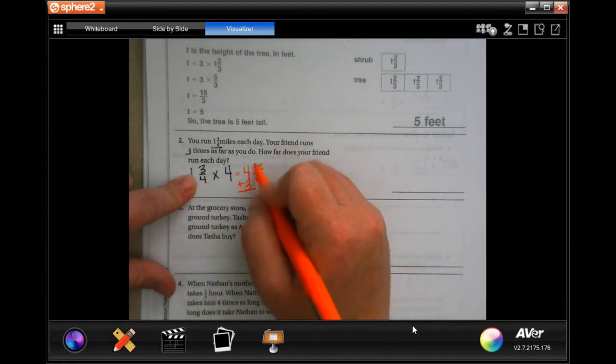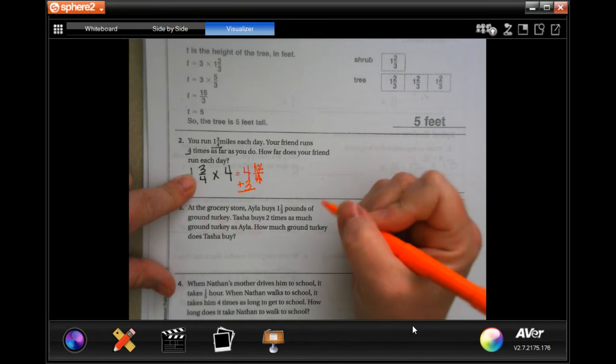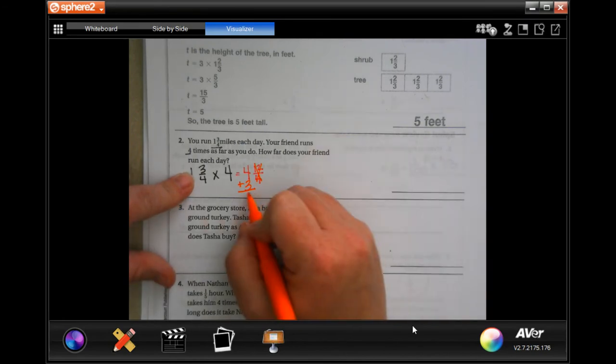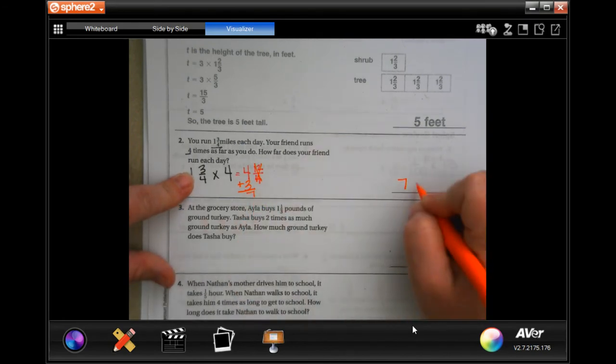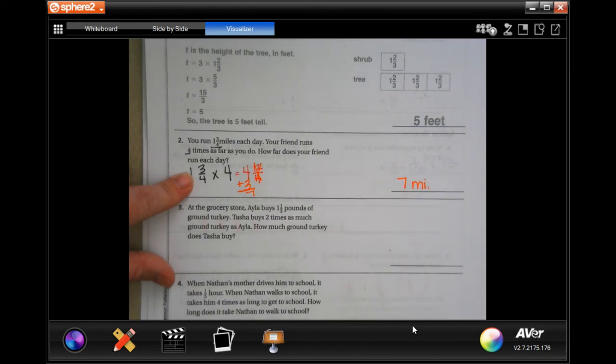That actually cancels that out because it goes in evenly. So, your answer is seven. Seven miles.